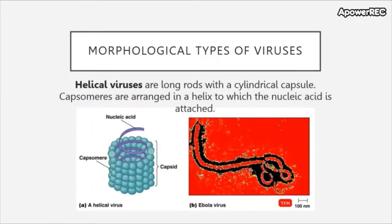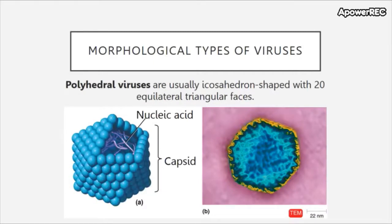There are many morphological types of viruses. Helical viruses are long rods with a cylindrical capsid where capsomeres are arranged in a helical fashion with nucleic acid attached, forming a helical staircase. An example is the Ebola virus. Polyhedral viruses are usually icosahedron shaped, having 20 equilateral triangular faces. Adenoviruses and polioviruses are examples of these.